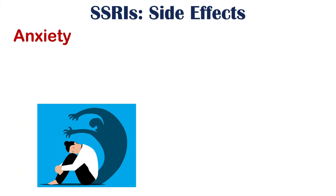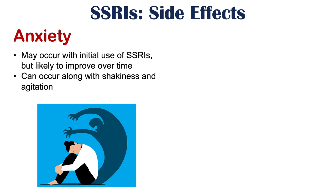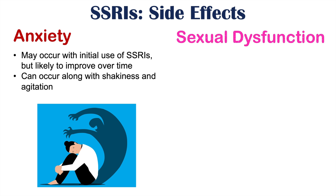Anxiety can also be a side effect of SSRI use. This is going to most likely occur with initial use of SSRIs but is likely to improve over time. This can occur along with the shakiness and agitation mentioned before.